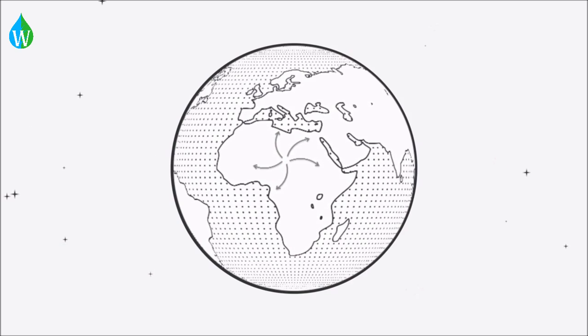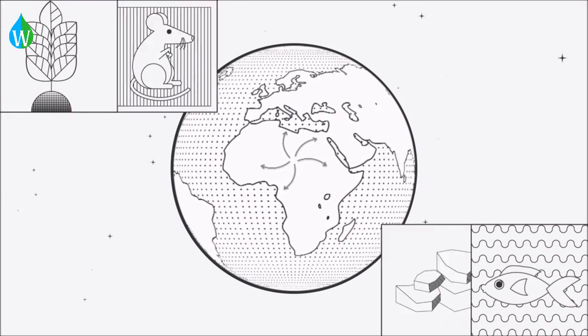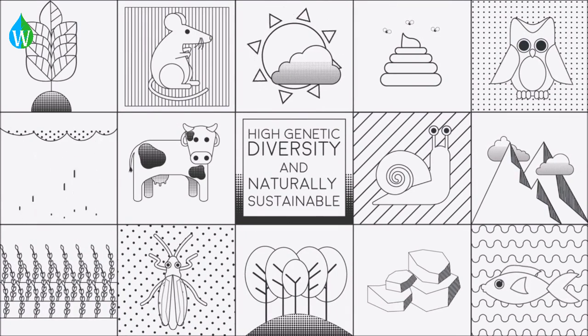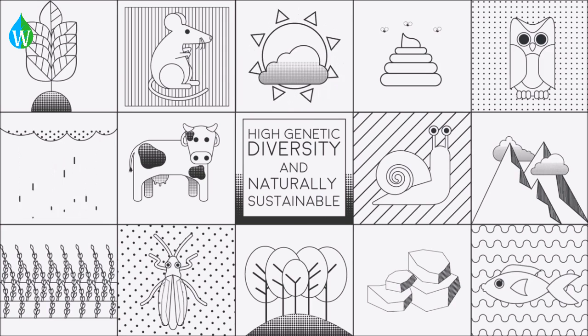Overall, natural ecosystems consist of many species of plants and animals and have long and complex food webs and high genetic diversity. They are also naturally sustainable.